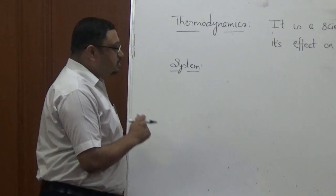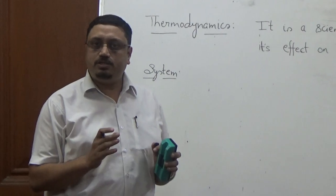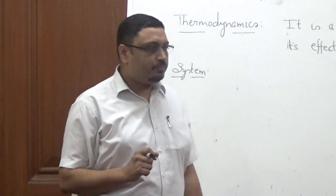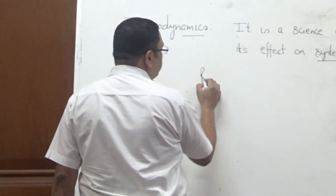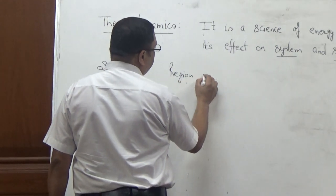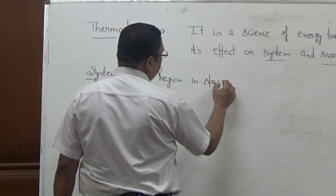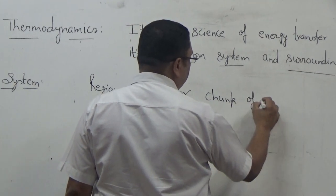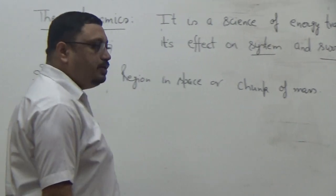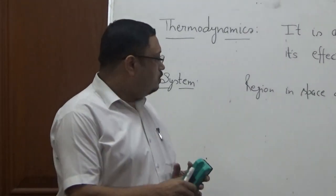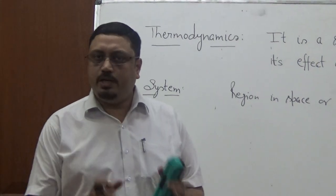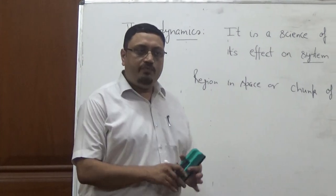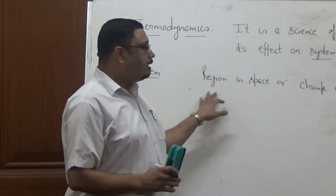A thermodynamic system is a region in space or a chunk of mass on which we focus ourselves to solve a thermodynamic problem. For example, if we have a certain volume of gas in a particular container, that is a chunk of mass, and if we consider this volume, this volume is a region in space.